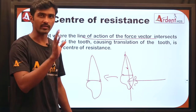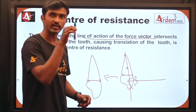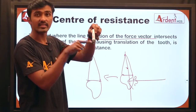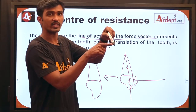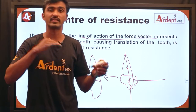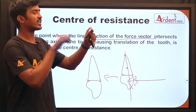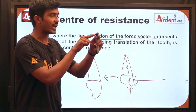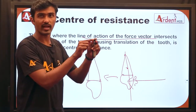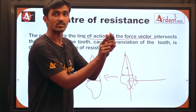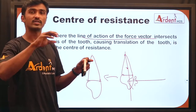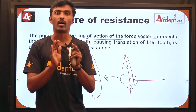To put it simply: if we apply a force at the center of resistance, we get bodily movement. When I push this pen at its center, it moves in a straight manner. But if I push it at the tip, the pen moves and also rotates — this rotational tendency is called the moment of a force, which will be discussed in a separate session. Applying force at the center of resistance produces translation; applying it at a distance produces both movement and rotation.